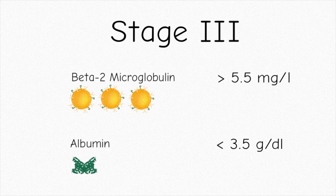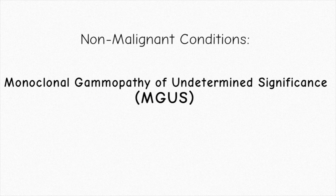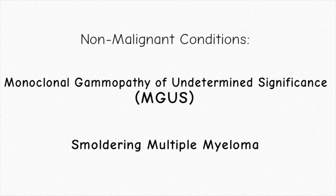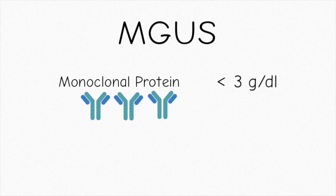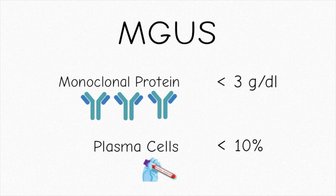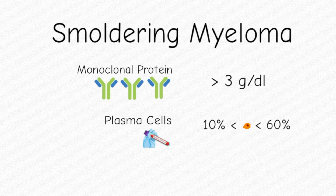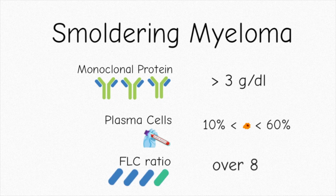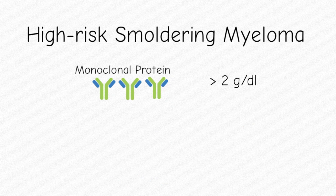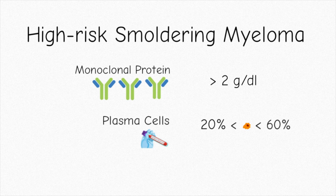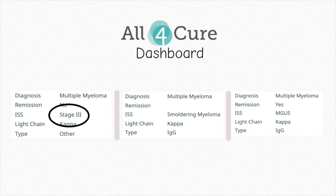If you don't meet the criteria for multiple myeloma, you may be diagnosed with a nonmalignant condition. You could either be diagnosed with monoclonal gammopathy of undetermined significance, or MGUS, or smoldering multiple myeloma. The criteria to be diagnosed with MGUS and smoldering myeloma are lower than the criteria to be diagnosed with multiple myeloma. High-risk smoldering myeloma has its own criteria. Some oncologists and patients discuss whether starting treatment is the right choice for them. If you look on the All4Cure dashboard, you'll see that we record the specific diagnosis and staging of your multiple myeloma.